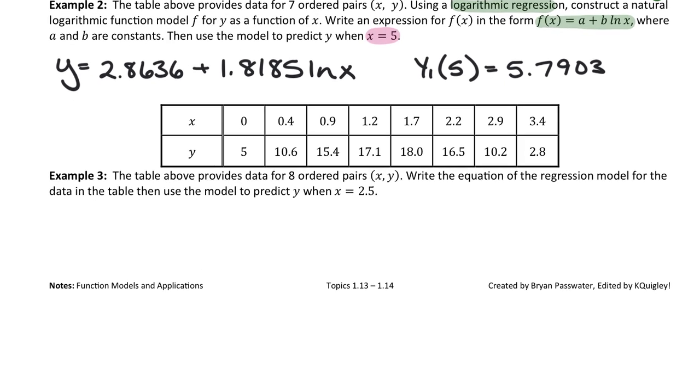Example 3 is a challenge question. Example 3 says, the table above provides data. Write an equation of the regression model for the data in the table and then predict the future. Did it tell us what type of data this is? Oh, no, we have to choose the correct type of regression for ourselves. So let's think back to last class. What did we do last class to see the equation to know what kind of regression we wanted to write? Well, we could, but are these equal length input value intervals? So it's a hard one. What did we do last class on that example when we used the calculator?